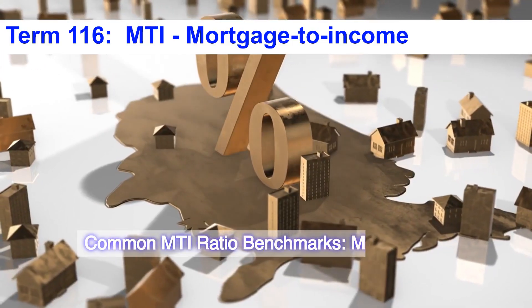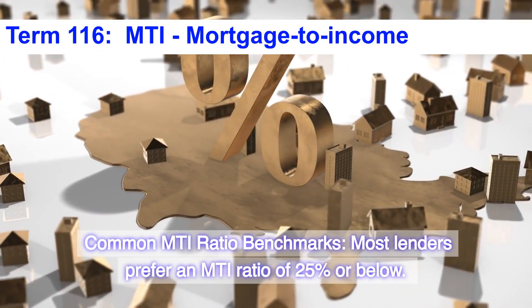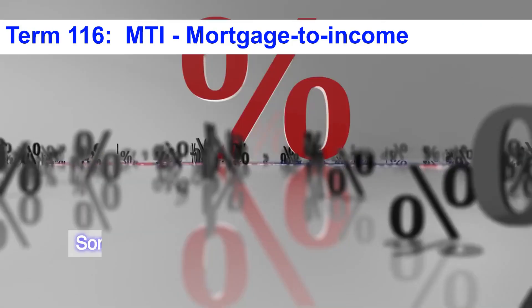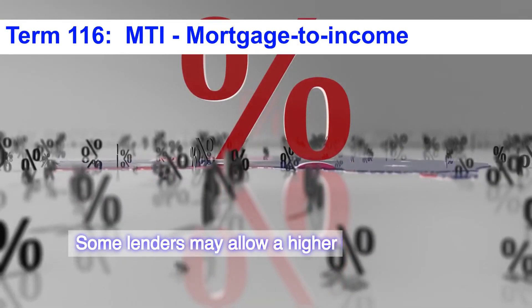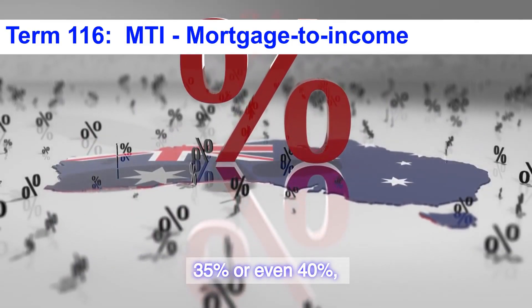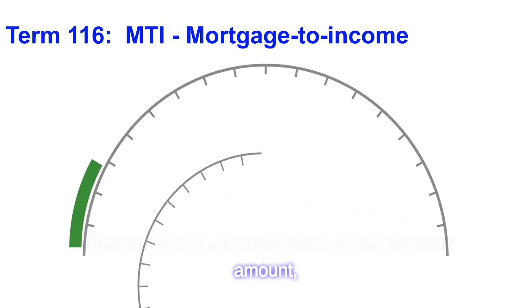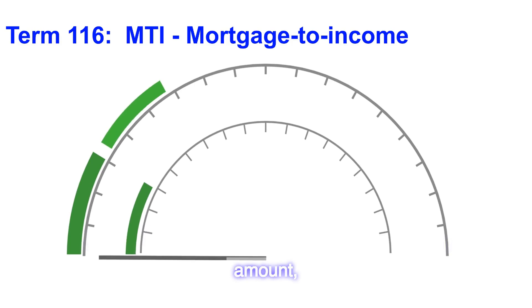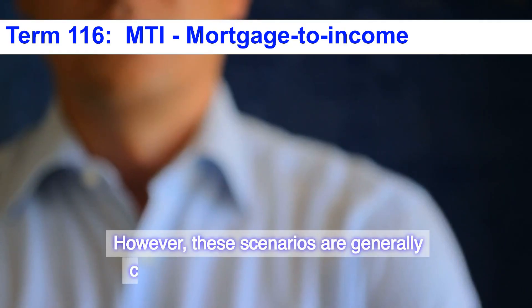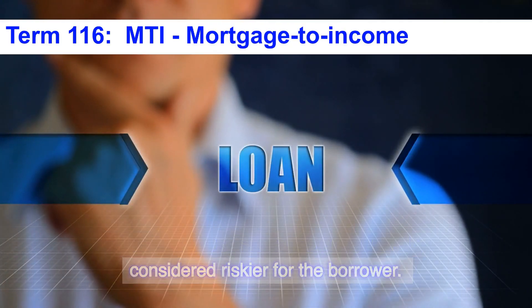Common MTI Ratio Benchmarks: Most lenders prefer an MTI Ratio of 25% or below. Some lenders may allow a higher MTI Ratio, up to 35% or even 40%, depending on your credit score, down payment amount, and other financial qualifications. However, these scenarios are generally considered riskier for the borrower.